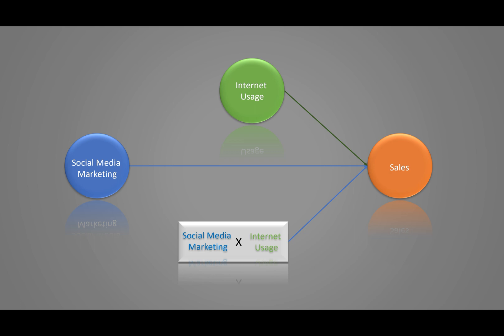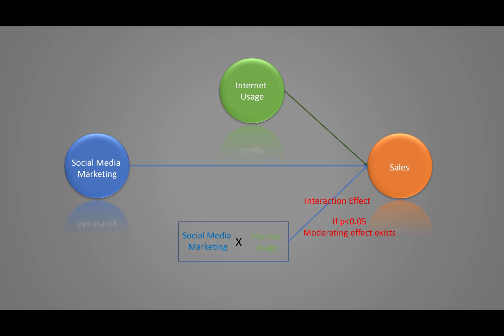Before SmartPLS, we used other software and created interaction terms by multiplying standardized values of all variables and their items, which was a complex and lengthy process with multiple calculation methods. Thanks to SmartPLS 4, it made our work very easy — we can calculate this interaction effect with just one click. If the interaction effect is significant, we can say the variable has a moderating effect. Specifically, when the p-value is less than 0.05, we can claim that the moderating effect exists.